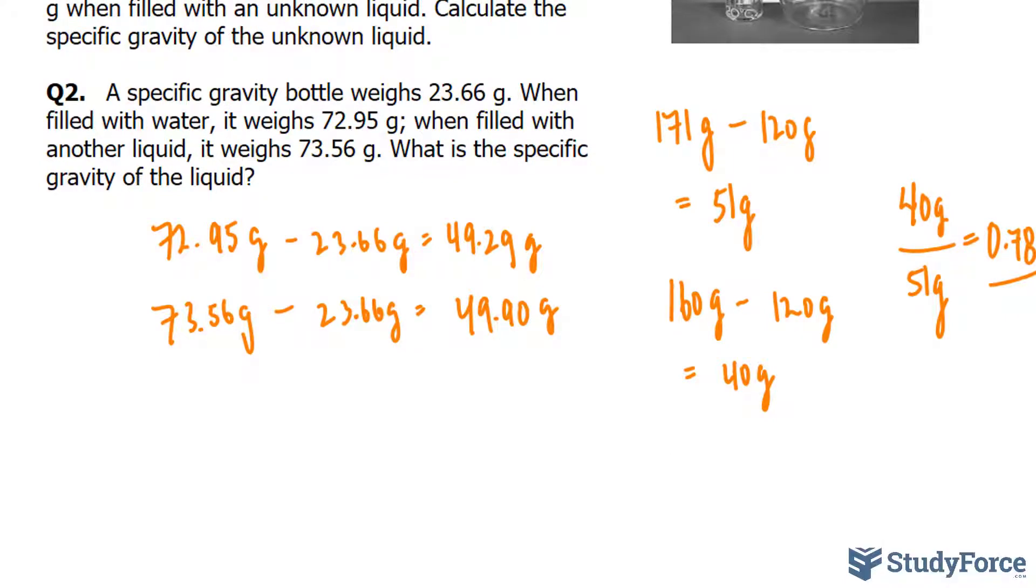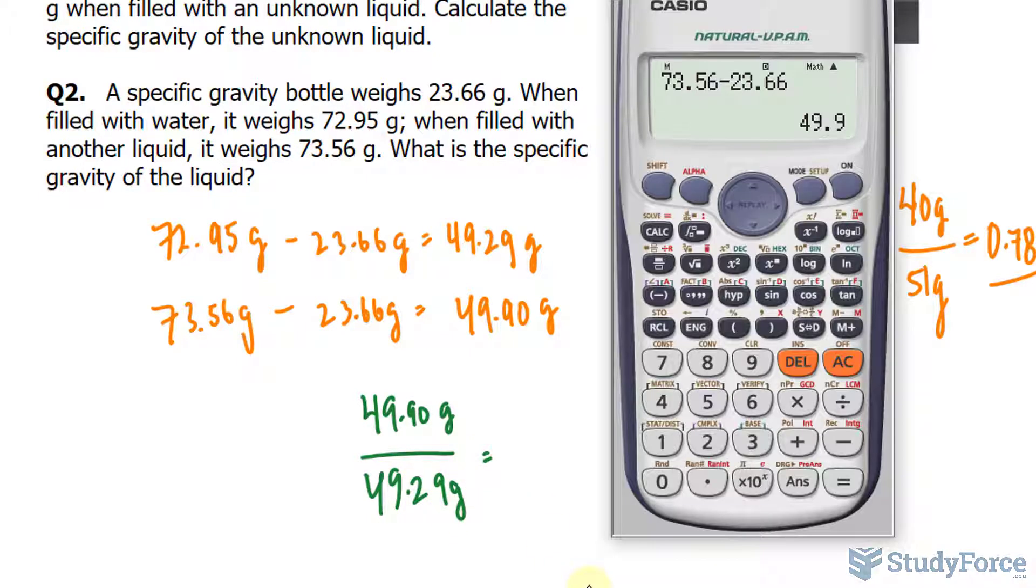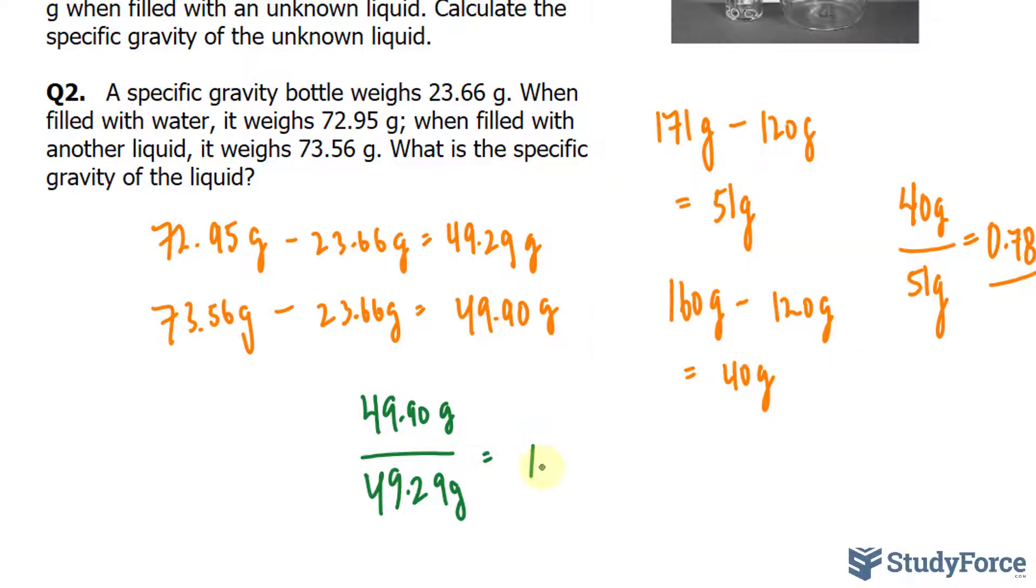Now, I will divide 49.90 by 49.29 grams. So, the value on our screen, divided by 49.29, and that gives us a value of 1.012. We want this to four significant figures, three digits after the decimal place. 1.012.